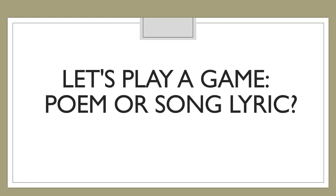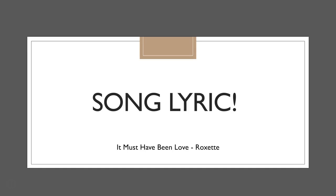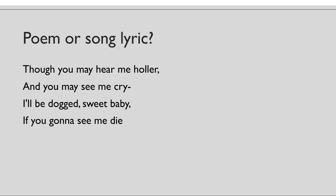So let's play a game. I'm going to read you a piece of text and you are going to guess whether it is a poem or a song lyric. I know this is a little hokey since we are not in the classroom, but go ahead and play at home — let's have some fun. Poem or song lyric: 'Make believing we're together, that I'm sheltered by your heart, but in and outside I've turned to water like a teardrop on your palm.' It's a song lyric — that's from 'It Must Have Been Love' by Roxette.